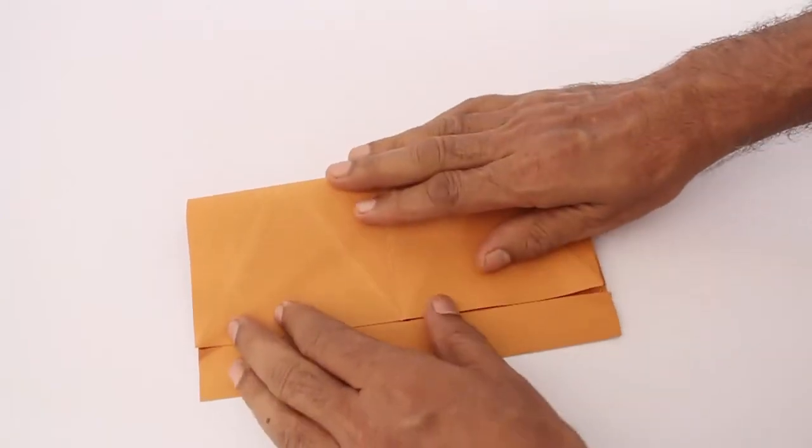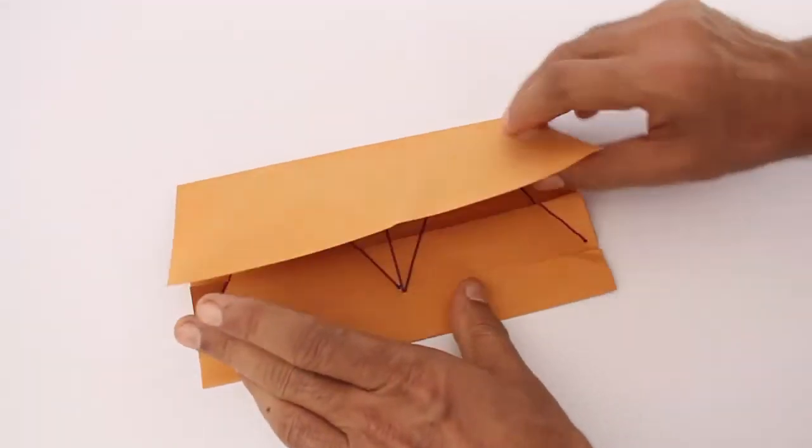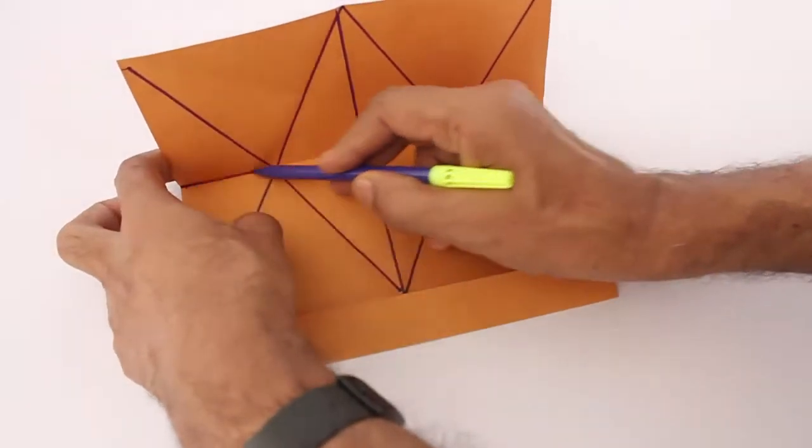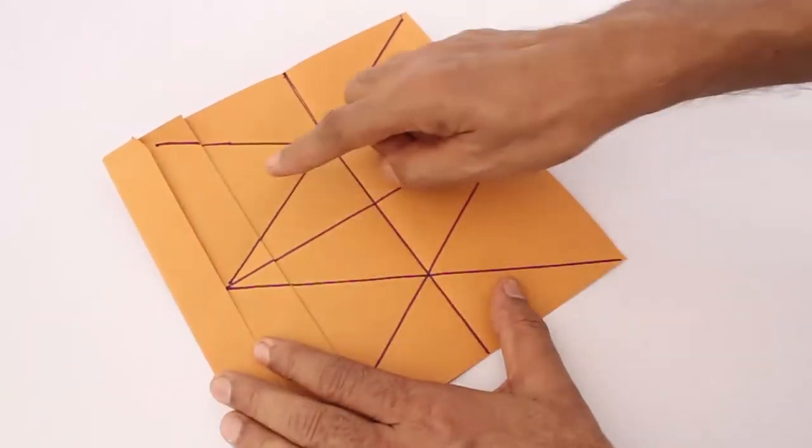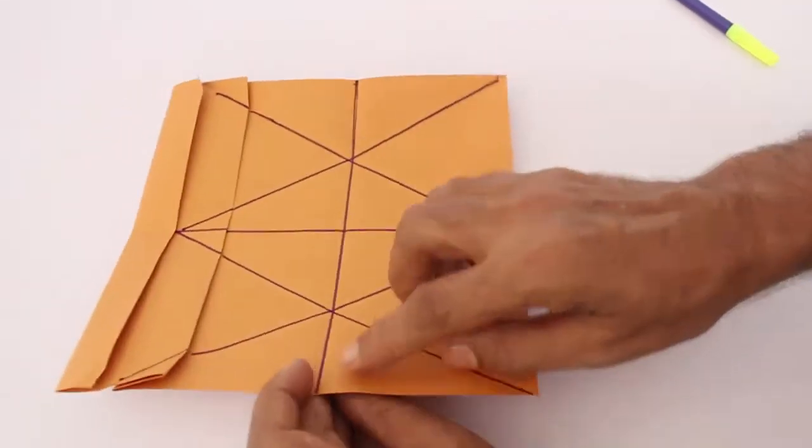Now fold the paper into half and crease well. Open the paper. Now you can see these two small triangles.